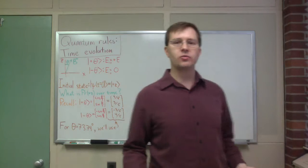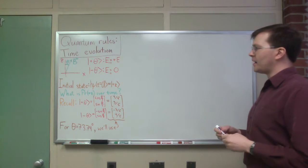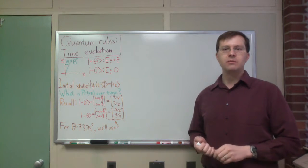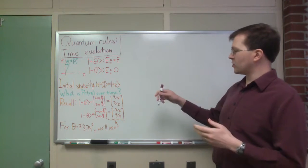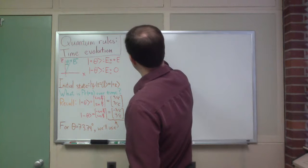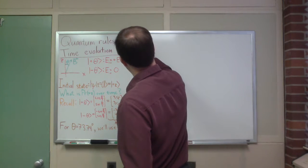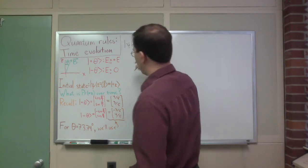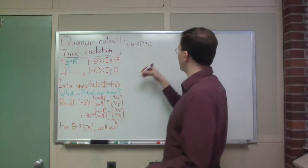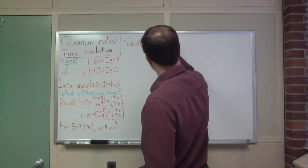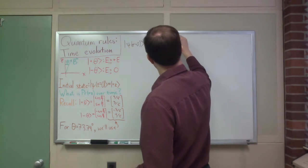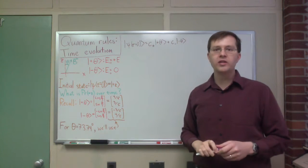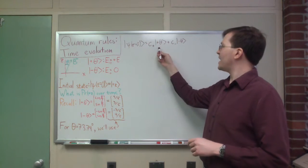We want to do this time evolution calculation — how the state's going to change with time. The first step is to understand the initial state in terms of the energy states. We want to write psi at time equals zero as some linear combination: c-plus times the plus theta state, plus c-minus times the minus theta state. We need to write this state as a linear combination of those two.